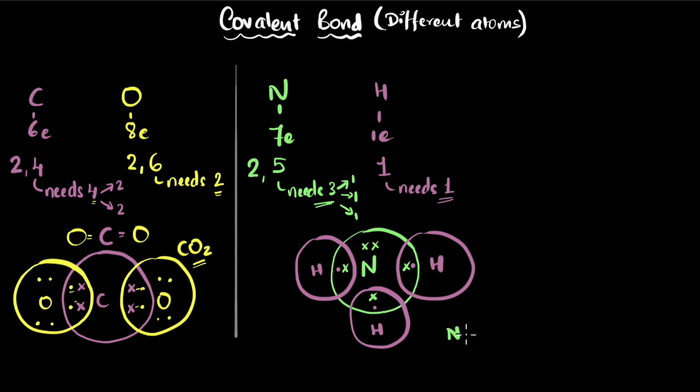This means nitrogen forms a single bond. Look at that. A single bond with three hydrogen atoms, giving us NH3. So this is how they covalently bond. And this is ammonia.